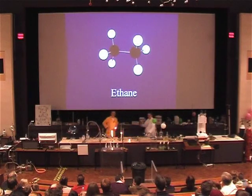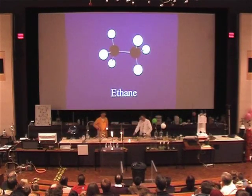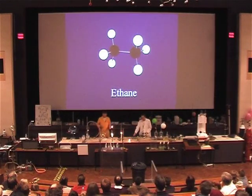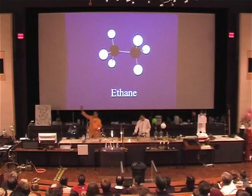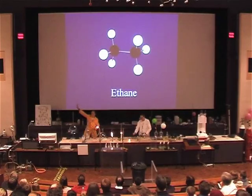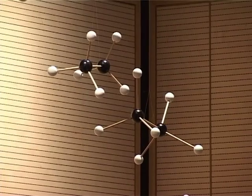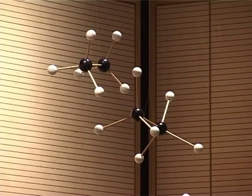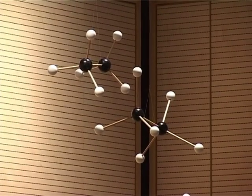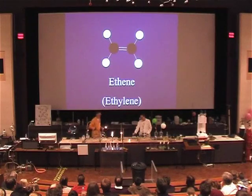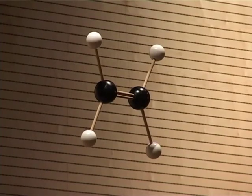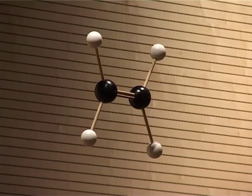Now we're going to try a slightly different gas. The first one was ethane, and as I said there are two carbons and six hydrogens. The next one we're going to use is ethene, and this consists of two carbons again, but only four hydrogens.